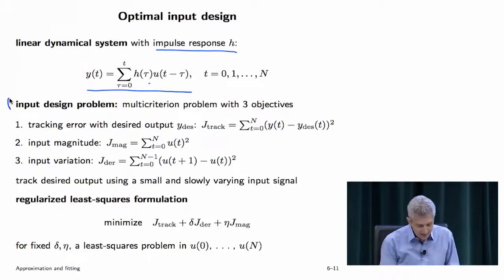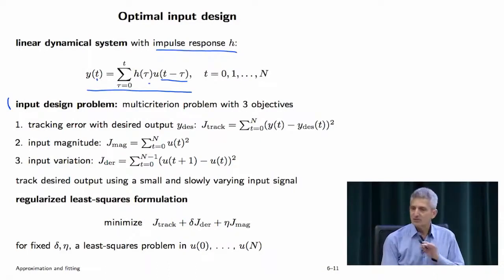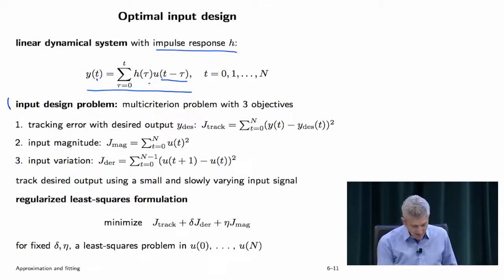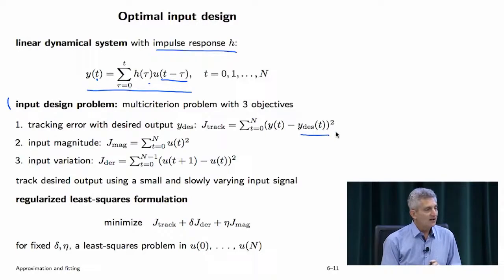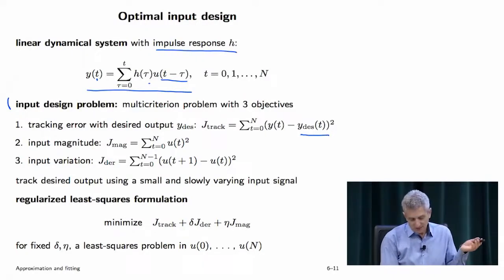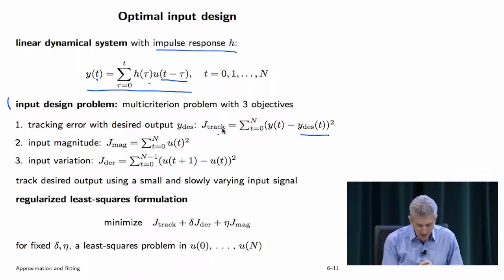The input design problem: choose input U so that output Y does something you want. What I want is to track a given desired trajectory. I have to give a measure for mistracking, which I'll call J-track.